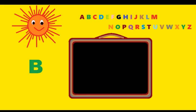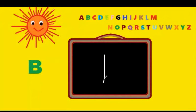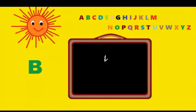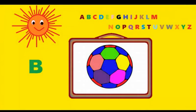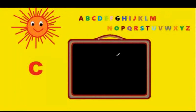Next letter is B. You have to draw a standing line, go around the corner, again round the corner. Let's see it again: you have to come down the tree, round the corner, again round the corner. B is for ball.